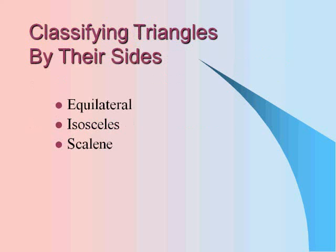Classifying triangles by their sides, you would call them either equilateral, isosceles, or scalene.